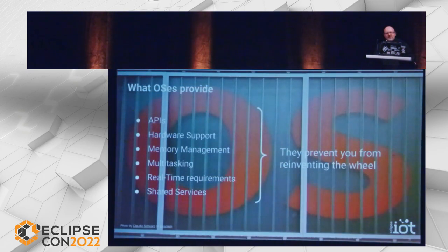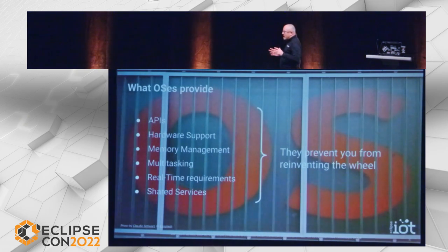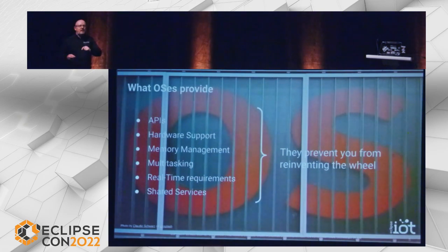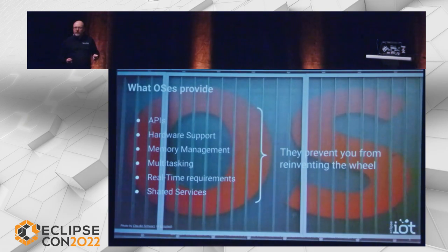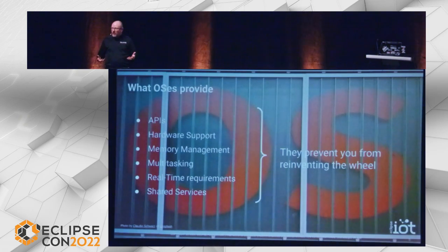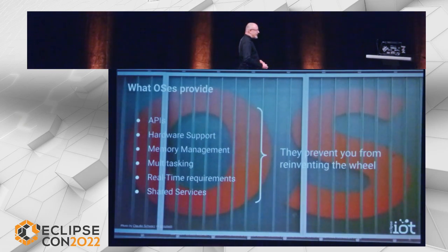Taking a step back: if you need to decide on whether you need an OS or not, you have to factor in what OSes typically provide. The first on the list are APIs — that's the main reason why you would need one. Microsoft Windows historically became an industry juggernaut for one and only one reason: apps. People wanted to run Office, and that's why it sold. APIs generally speaking are our way to make applications run, and they simplify our own code as developers.